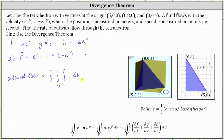Let's use the volume formula: volume equals one-third times the area of the base times the height. The base is the X, Y trace. In the X, Y plane, the X intercept is the point (5,0) and the Y intercept is the point (0,8). The volume, which equals the outward flow, is one-third times the area of the base — which is one-half times base times height of the triangle in the X, Y trace — so one-half times five times eight, times the height of the tetrahedron, which from the Z intercept is four.